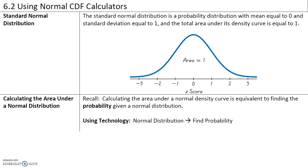In section 6.2, we will use normal CDF calculators to calculate the probability of an event, which, as you recall, is the area under the density curve. The standard normal distribution is a probability distribution with a mean equal to 0 and a standard deviation equal to 1. All standard normal distributions have a z-score of 0 and a standard deviation of 1. To convert a normal distribution to a standard normal distribution, take each data value and convert it to a z-score.